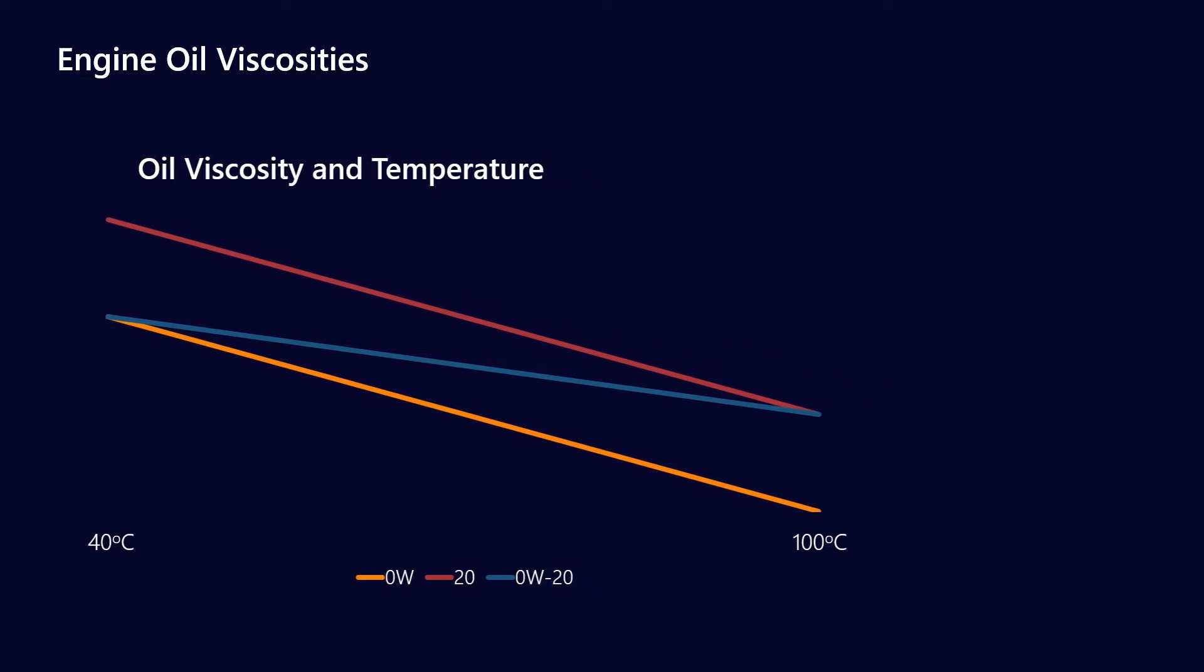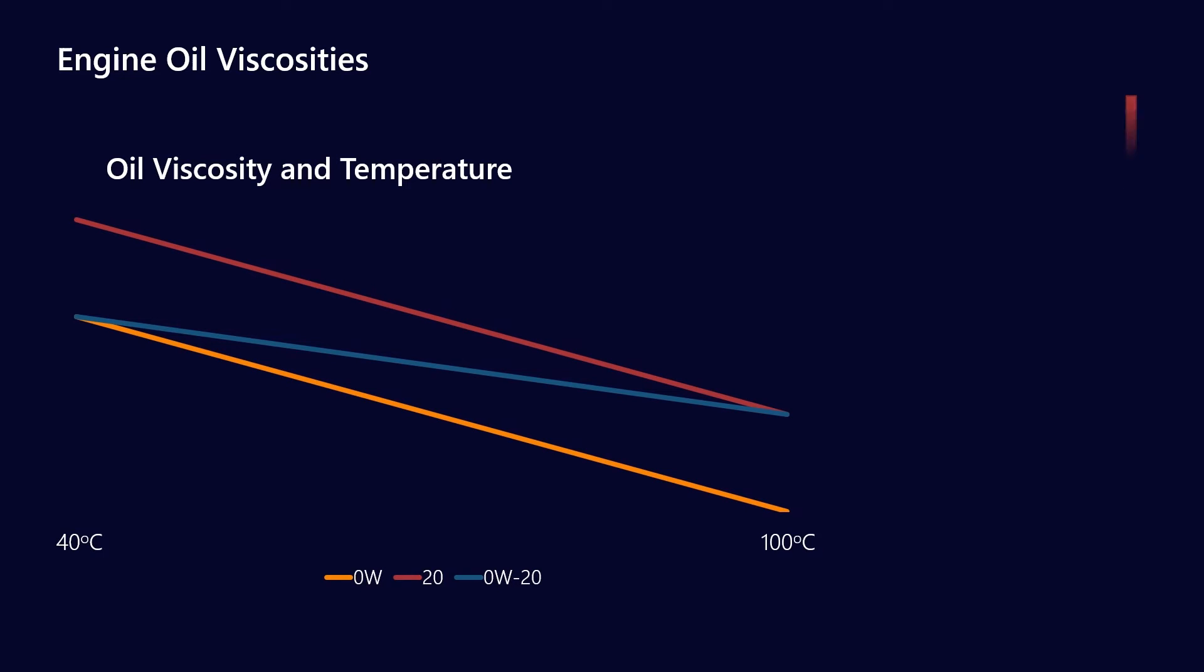What we want is some kind of measurement for a temperature that vastly exceeds 100 degrees Celsius. We're trying to get a feel for what is the viscosity behavior at temperatures of 150 to 200 degrees Celsius. That's where HTHS comes in and the high temperature part of HTHS is we're going to make a measurement at 150 degrees Celsius.